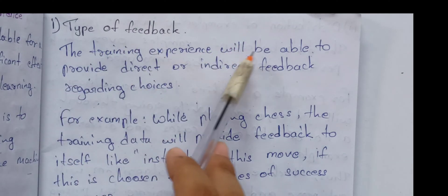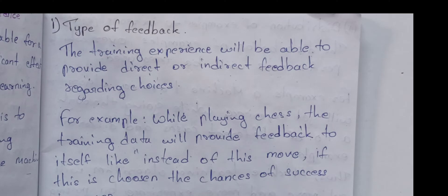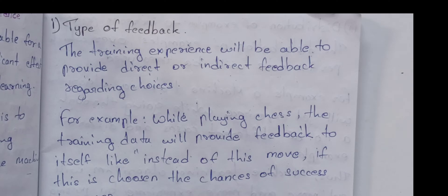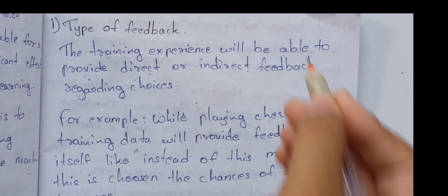Type of feedback: the training experience will be able to provide direct or indirect feedback regarding choices. For example, when we are in a shop and we select a dress, we give feedback. Similarly, a machine learning algorithm will give feedback. There are two types: direct or indirect feedback.